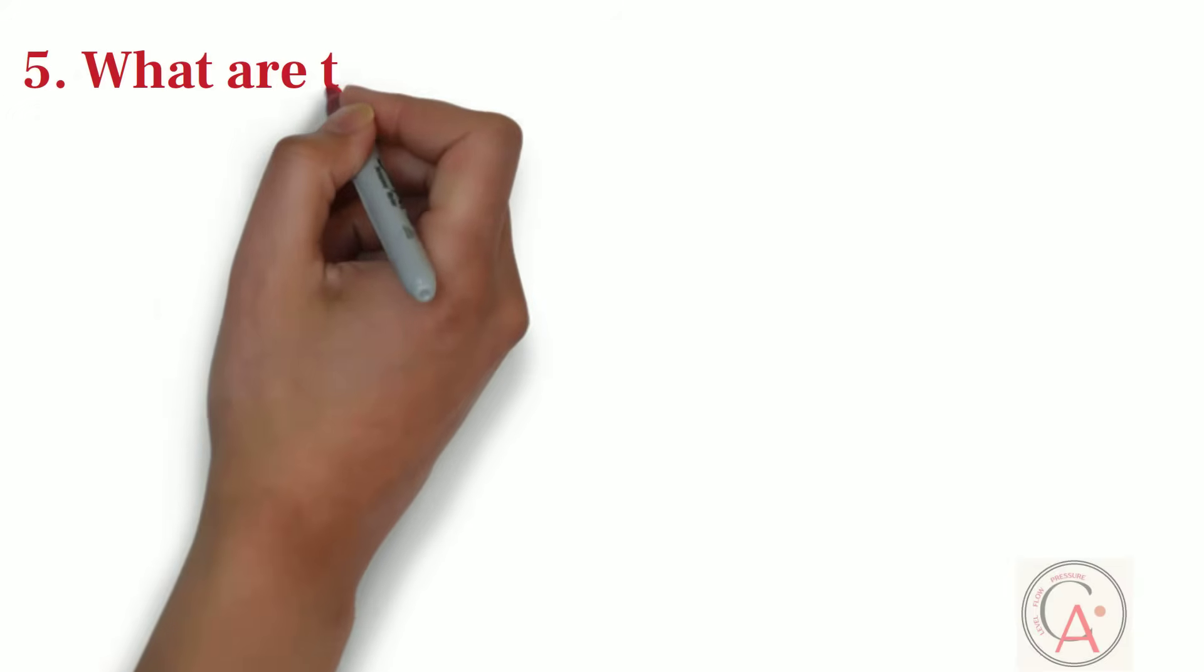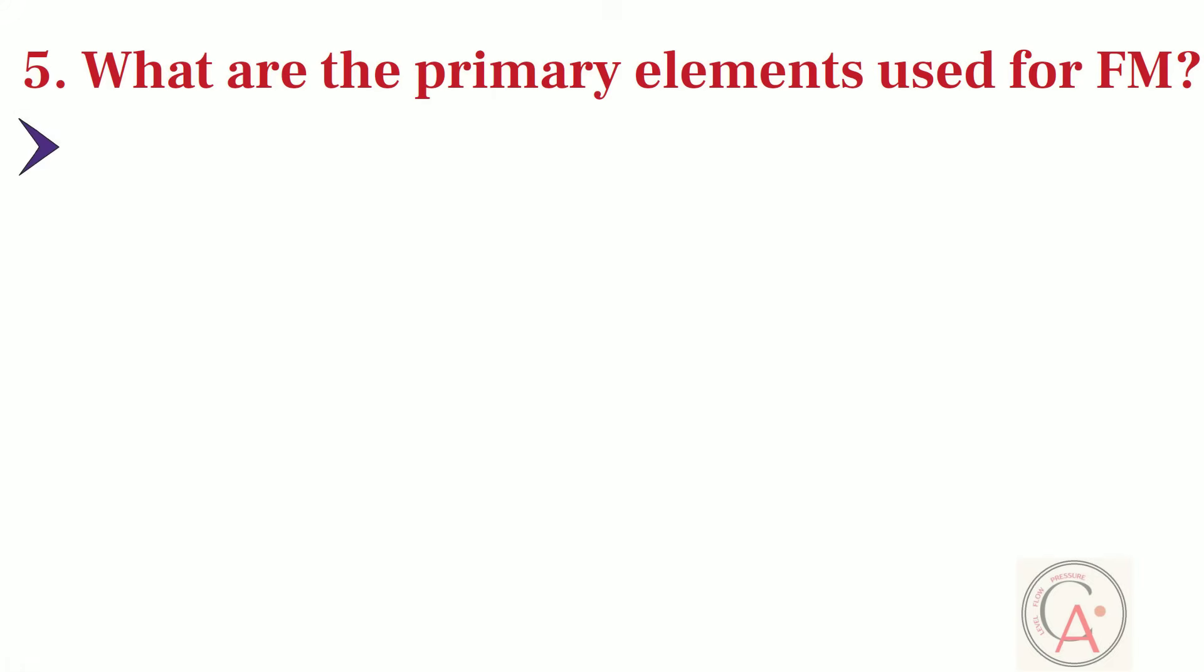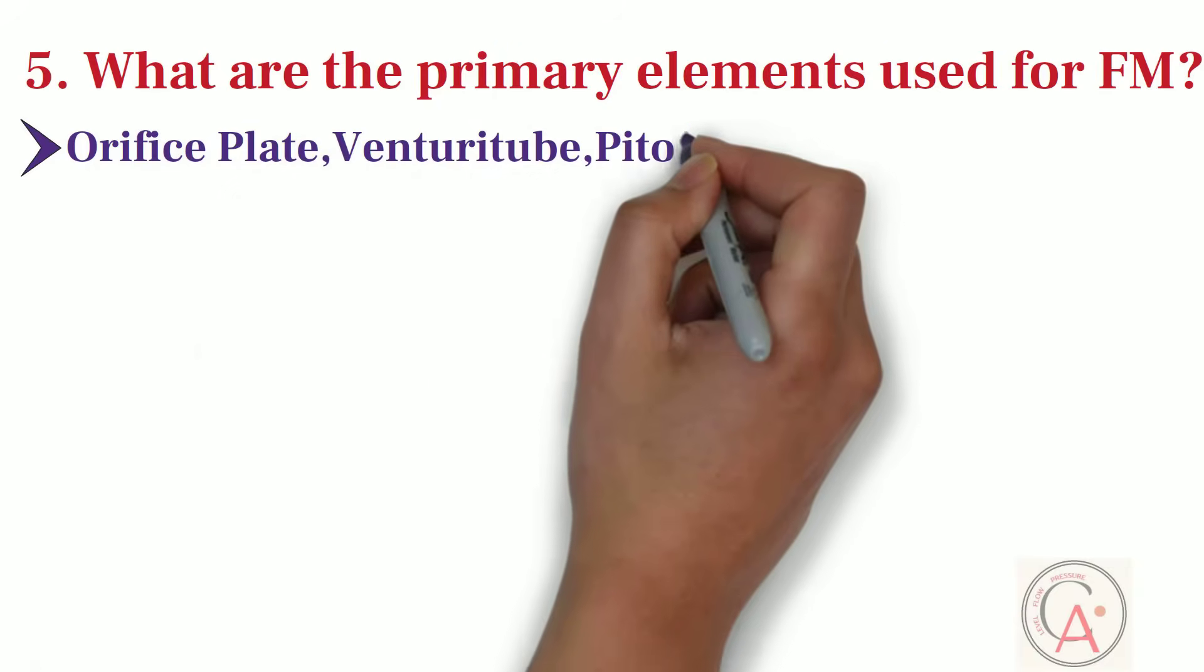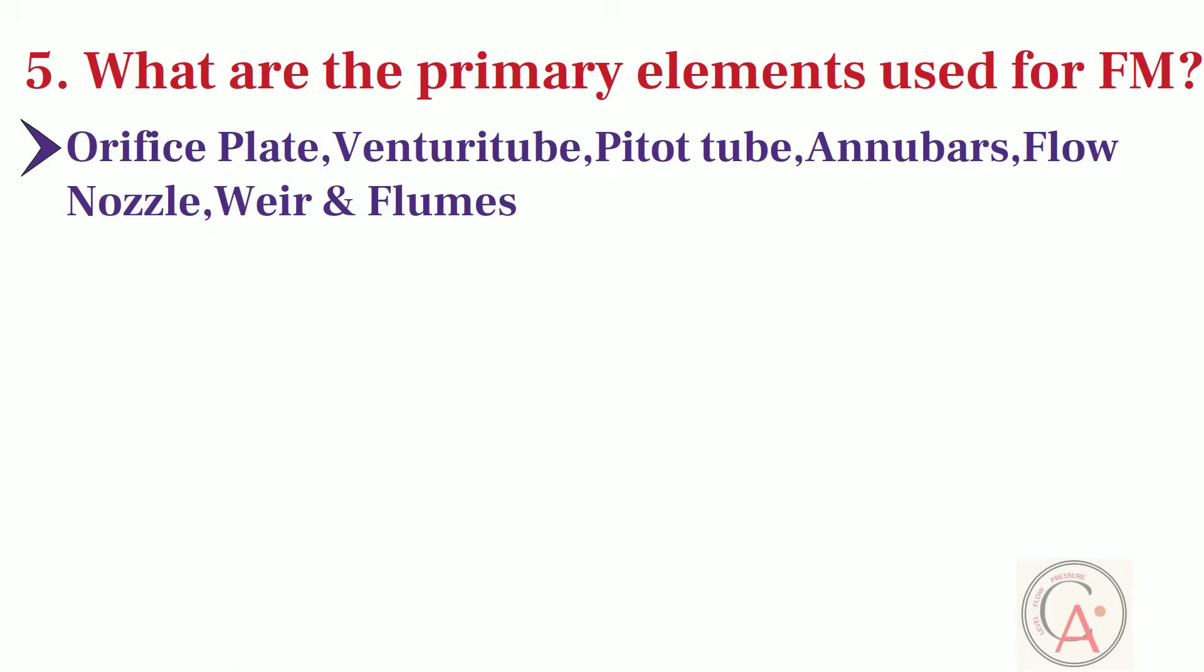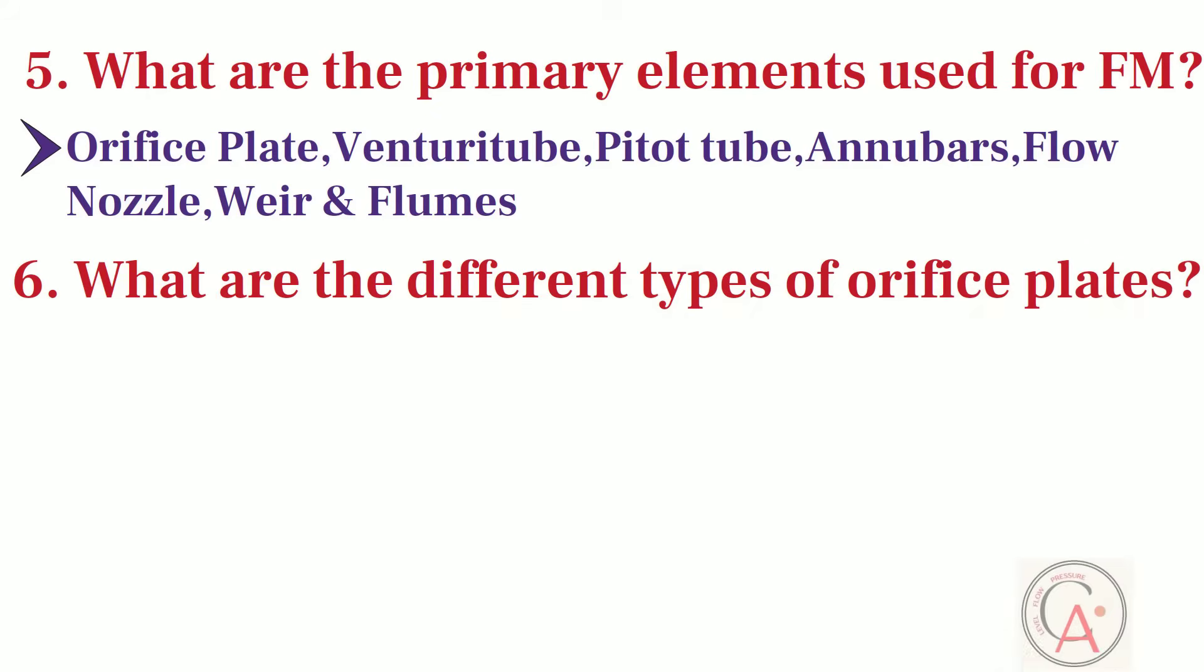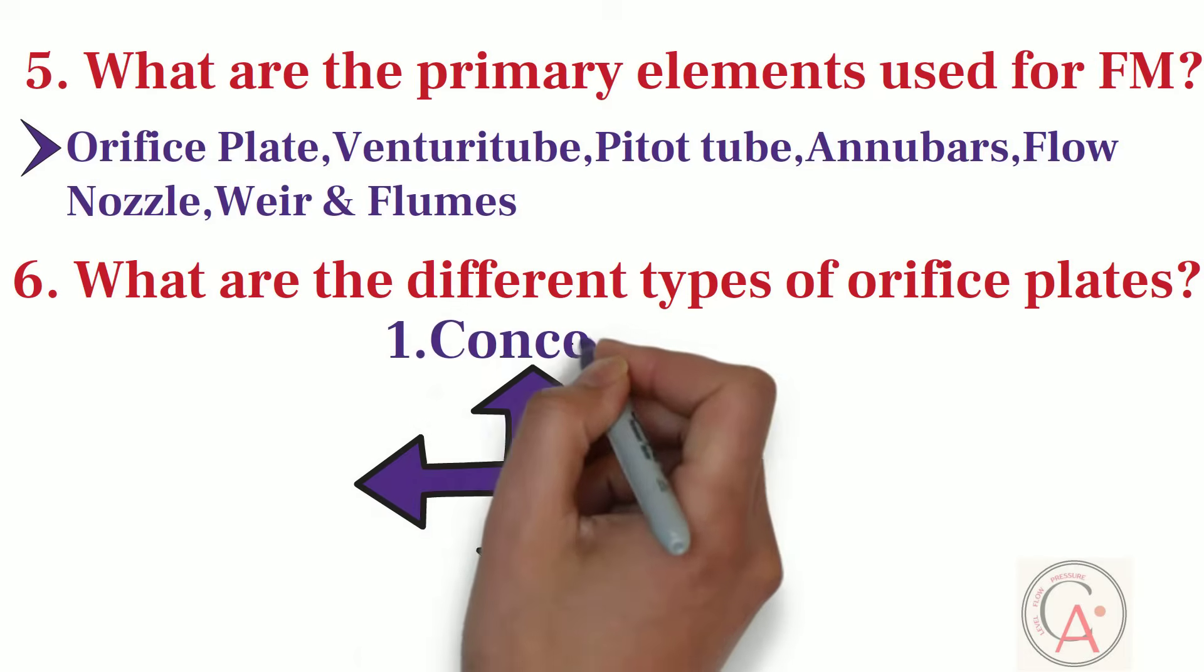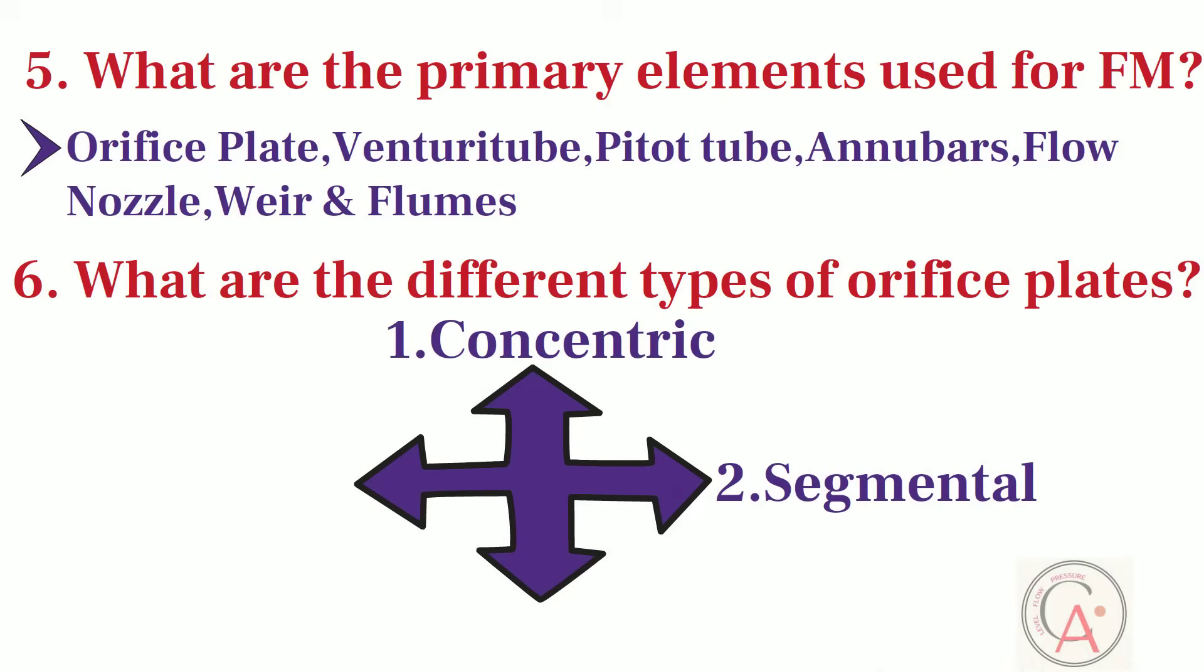Fifth question is, what are the primary elements used for flow measurement? The primary elements used for flow measurement are orifice plate, venturi tube, pitot tube, annubars, flow nozzle, weir and flumes. Sixth question is, what are the different types of orifice plates? There are four different types of orifice plate. First type is concentric. Second type is segmental. Third type is eccentric. And fourth type is quadrant edge.